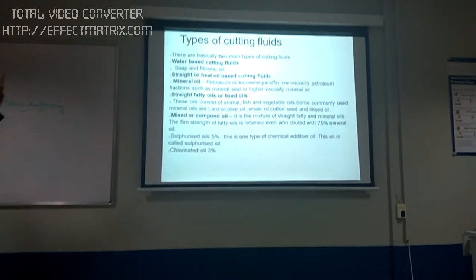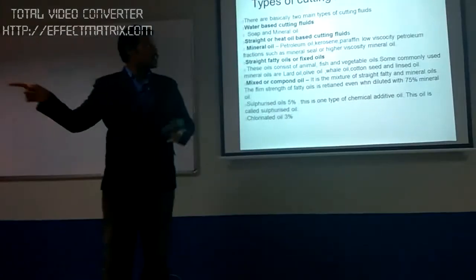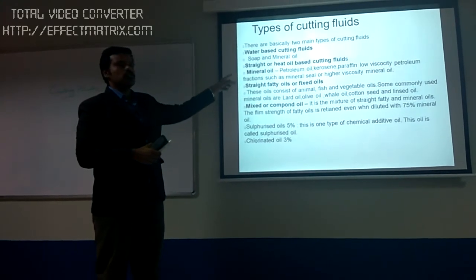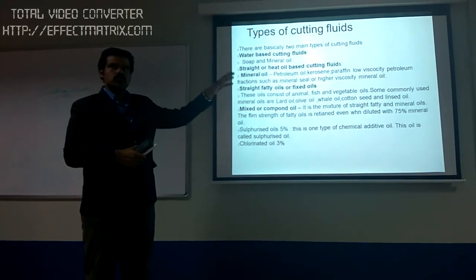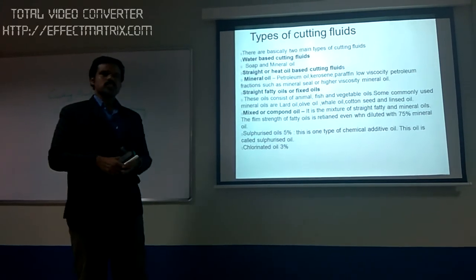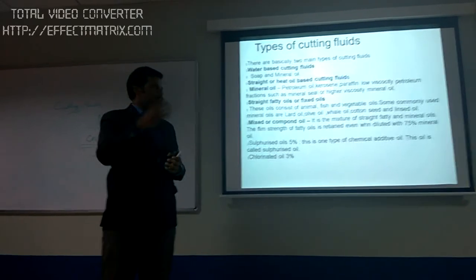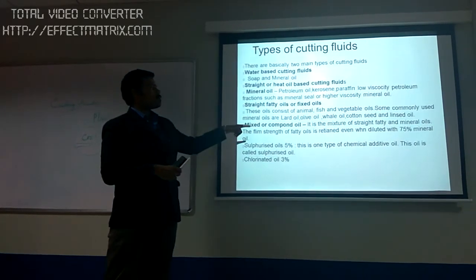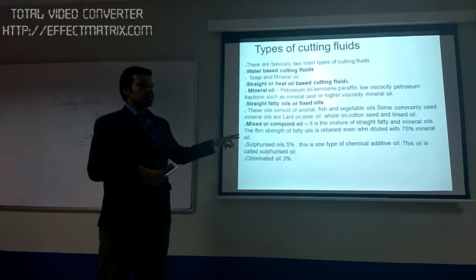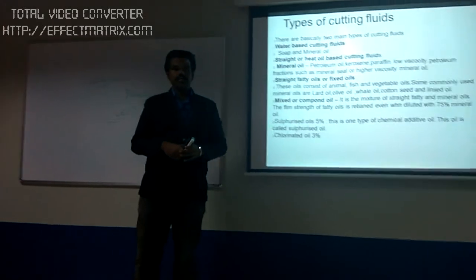There are two types of cutting fluids. One is water-based cutting fluid — a mixture of soap and mineral oil. The other is straight or neat oil-based cutting fluid, which includes petroleum oil, kerosene oil, paraffin, low viscosity oil, etc. There are also straight fatty oils or fixed oils consisting of animal fat, fish, or vegetable oil. Then there is mixer or compound oil — a mixture of straight fatty and mineral oils. Sulphurized oil contains 5% sulphur, and chlorinated oil contains 3% of chlorine.